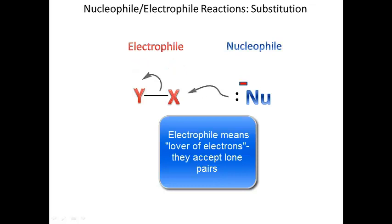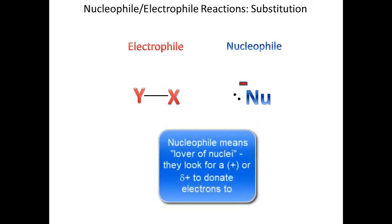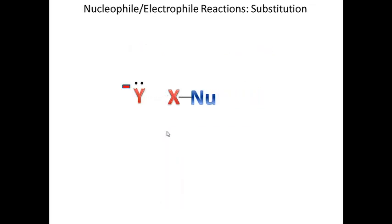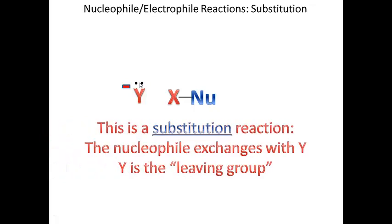A new bond forms between X and the nucleophile, and Y leaves with a pair of electrons, becoming negatively charged. This is known as a substitution reaction — one of the simplest reactions in chemistry. The nucleophile simply exchanges with Y: when the nucleophile comes in and attacks X, the bond between X and Y breaks, and Y becomes what we call the leaving group. A leaving group is an atom or group of atoms that leaves in a substitution reaction.